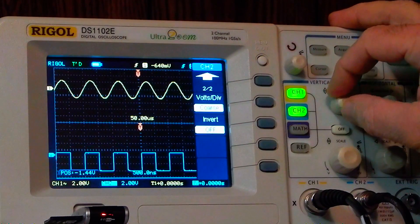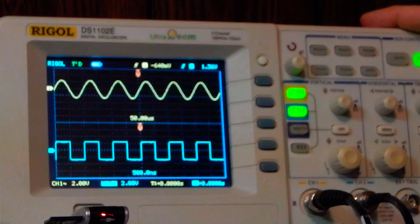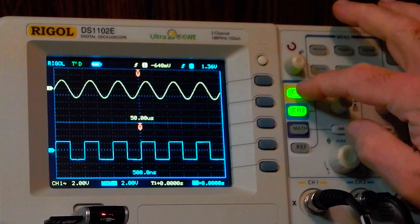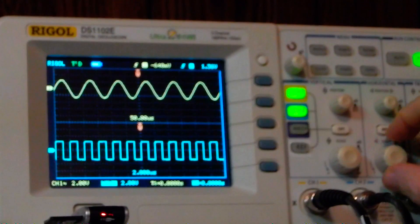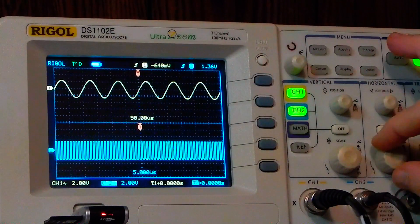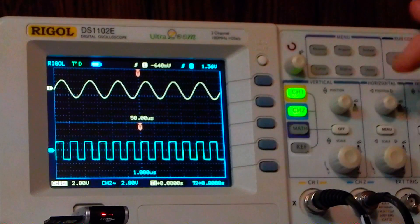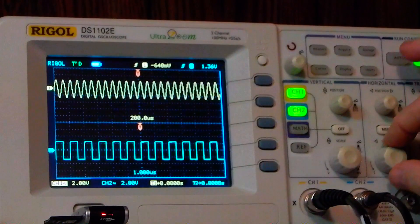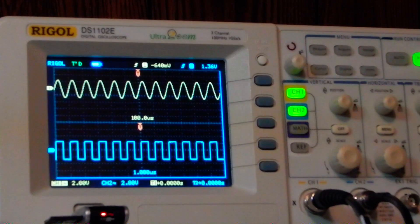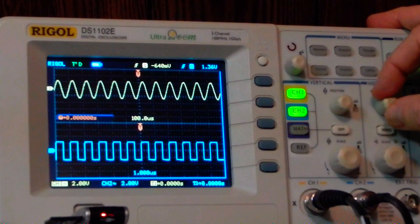The other thing is the horizontal time base. Depending which channel you're set to here, you can control the timing. Notice I'm adjusting the time base on the square wave but I'm not affecting the sine wave up here. Then I can just switch to channel one and do the same thing on the sine wave but not affect the square wave on channel two. They're independent of each other - all the settings are independent of each other, and that also includes the horizontal position and triggering point as well.